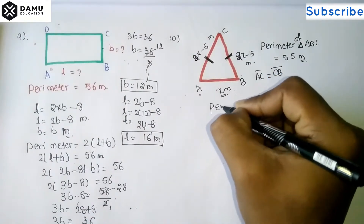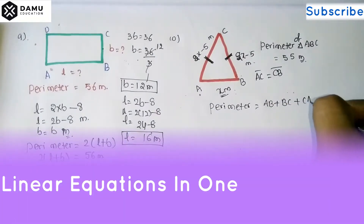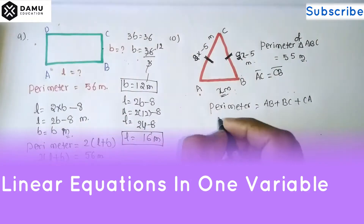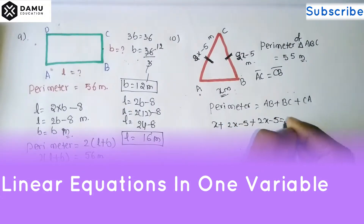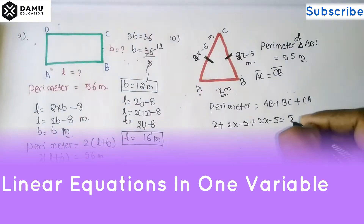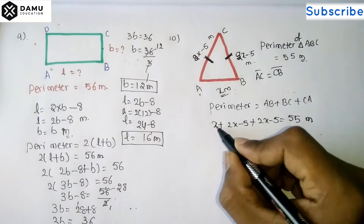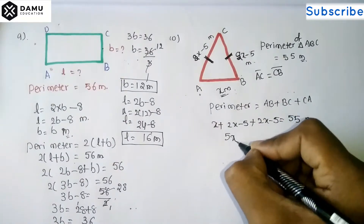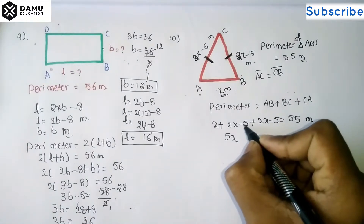The perimeter is given as 55 meters. Perimeter = AB + BC + CA. So x + (2x - 5) + (2x - 5) = 55 meters. Combining: x + 2x + 2x = 5x, and -5 - 5 = -10, giving 5x - 10 = 55.